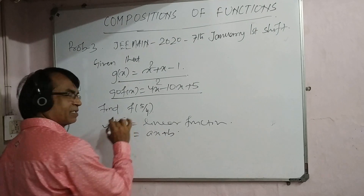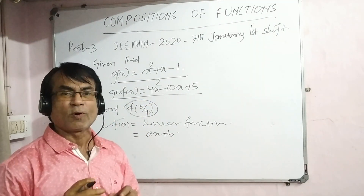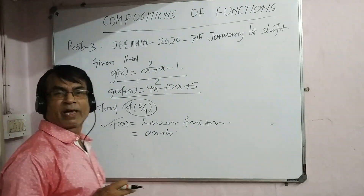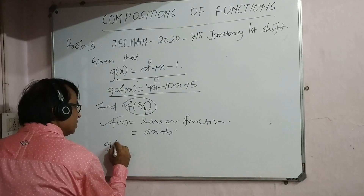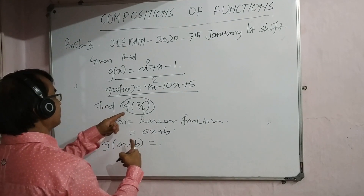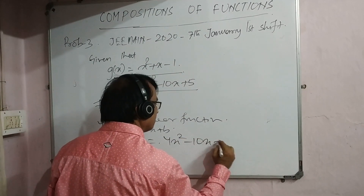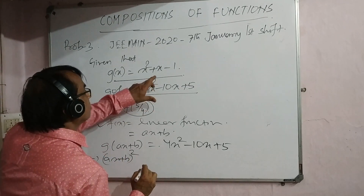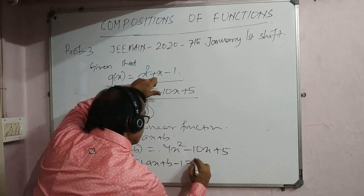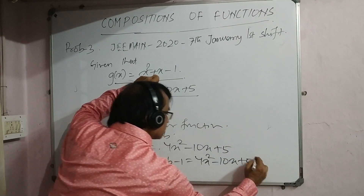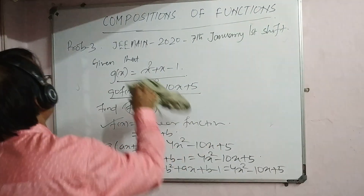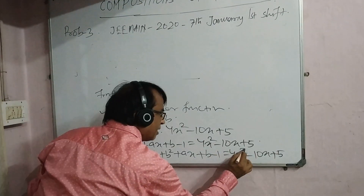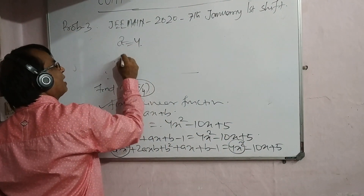We need to find f(5/4), so we need to determine f(x) = ax + b. Substituting: g(ax + b) = g(f(x)) = 4x² − 10x + 5. Expanding: (ax + b)² + (ax + b) − 1 = 4x² − 10x + 5. Comparing the x² coefficients: a² = 4, so a = 2.